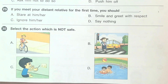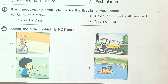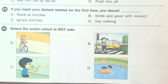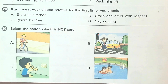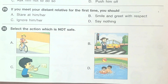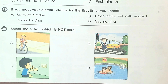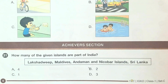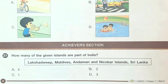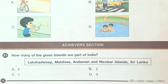Question number 29: if you meet your distant relative for the first time, you should dash. The answer is option B, smile and greet with respect. Question number 30: select the action which is not safe. The answer is option C. 31st question: how many of the given islands are part of India — Lakshadweep, Maldives, Andaman and Nicobar Islands, Sri Lanka? The answer is option B, 2.